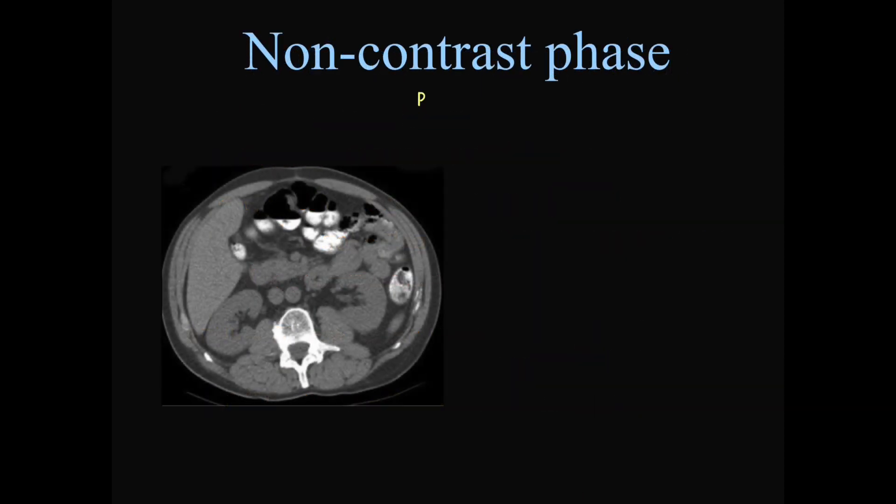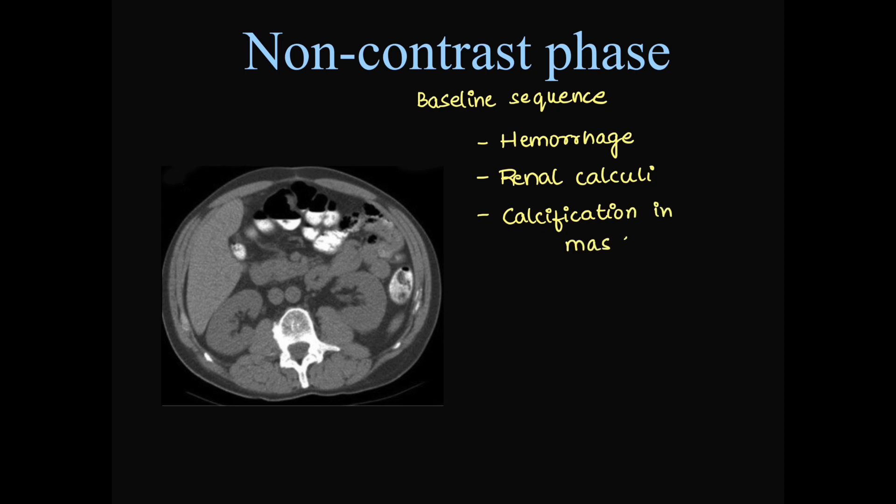Why do we take a non-contrast phase? This is a baseline phase or sequence in all the studies of KUB. We can rule out hemorrhage, mainly active hemorrhage, renal calculi, any calcification in the mass or a lesion. Or hyperdense cyst can be ruled out in this phase.